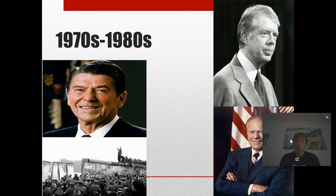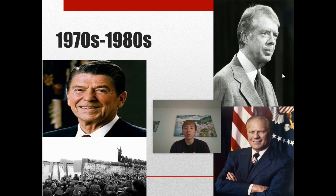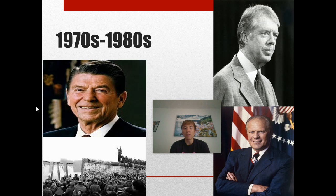Now into the 1970s and 80s — in order you have Gerald Ford, who was Richard Nixon's vice president, then Jimmy Carter who defeated Gerald Ford in 1976, and then after Carter you have President Ronald Reagan, who was the governor of California, serving two terms in the 1980s. And the picture here is the Berlin Wall, a very symbolic monument that pretty much separated East and West Berlin and basically divided Germany as a whole.